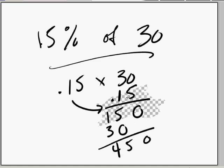15% of 30 is 1, 2 points in the decimal. So, we count over 1 and 2. So, our answer is 4.5.